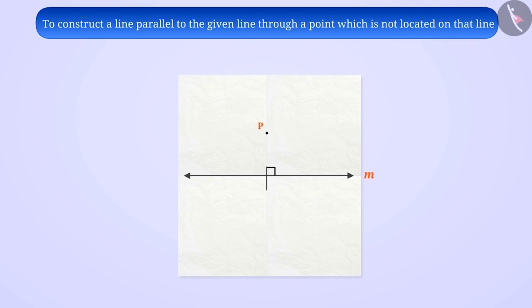Name the line N. Line N intersects line M at point Q. We can say that N is perpendicular to M. Make a fold perpendicular to this perpendicular through the point P. Name the new perpendicular line as L. Here we can say that L is perpendicular to N.